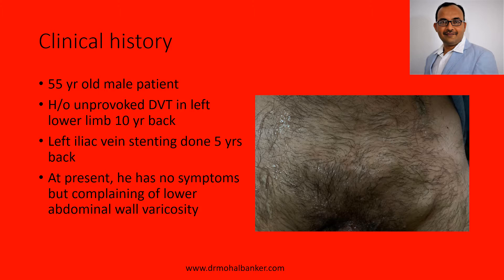This is a 55-year-old patient who has a history of unprovoked left lower limb DVT 10 years back. After that, on CT venography, it was detected that there is May-Thurner syndrome — stenosis into the left iliac vein. So 5 years back, he went for left iliac vein stenting, and later on all the complaints disappeared.